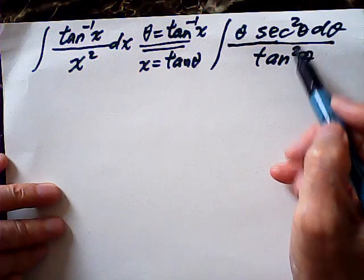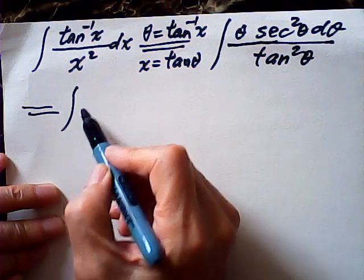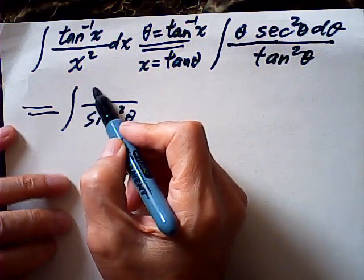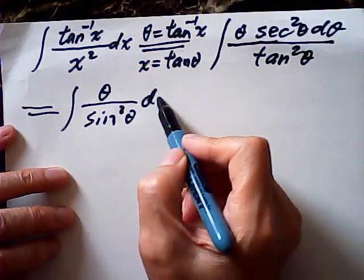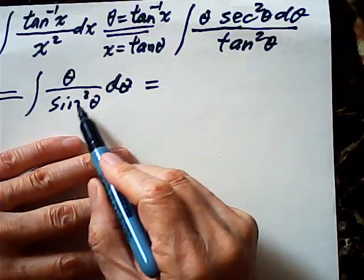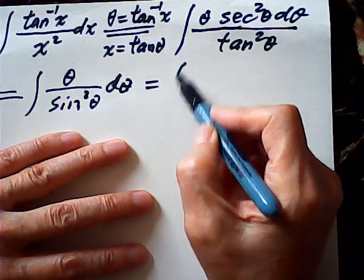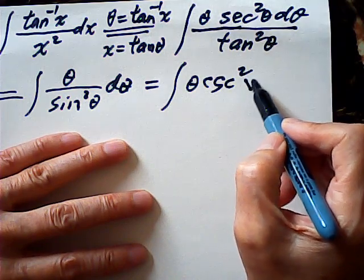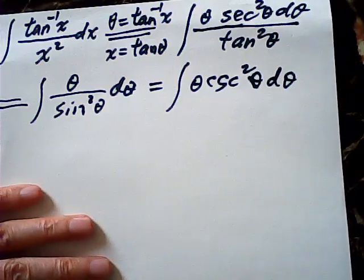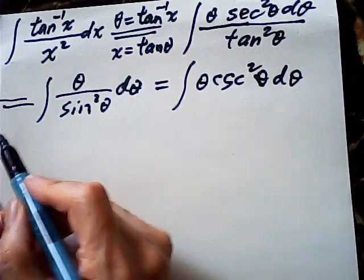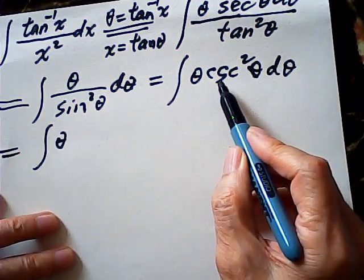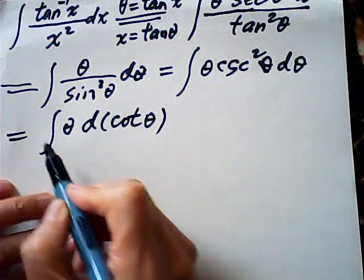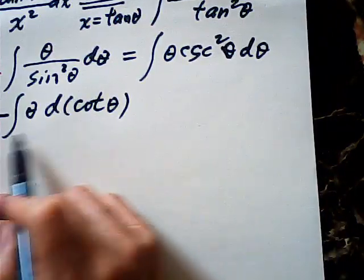Then I multiply by cosine squared theta, both top and bottom. So the denominator becomes sine squared, and the numerator will be theta d-theta. One over sine squared is cosecant squared, so it becomes theta cosecant squared theta d-theta. And cosecant squared theta d-theta is negative d(cotangent theta), so I put the negative outside. This is ready for integration by parts.